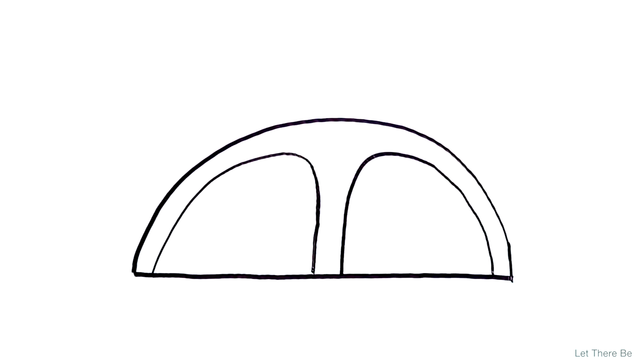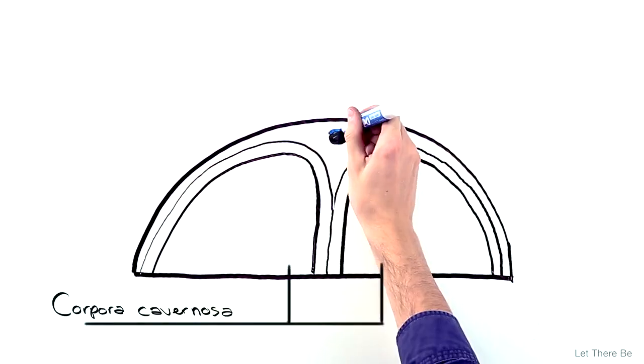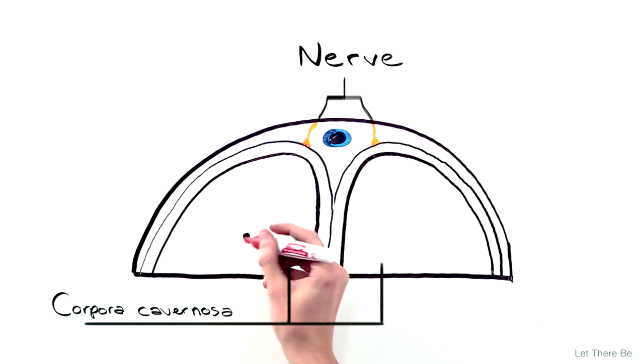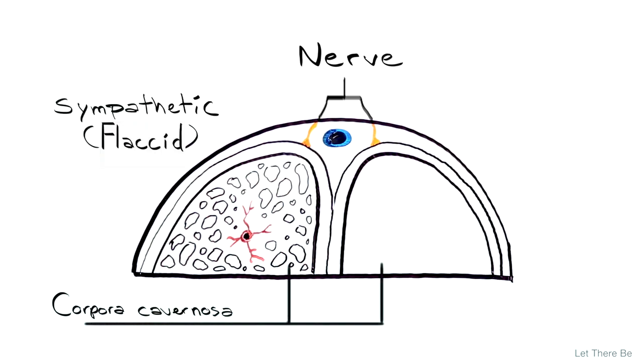Sympathetic nerve stimulation results in contraction of erectile tissue, which inhibits blood flow into the penis and causes the penis to become flaccid.